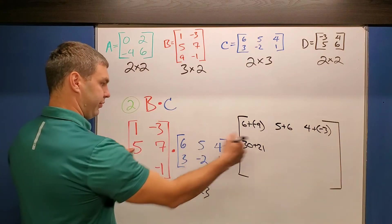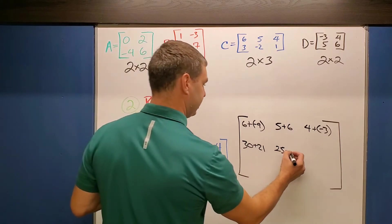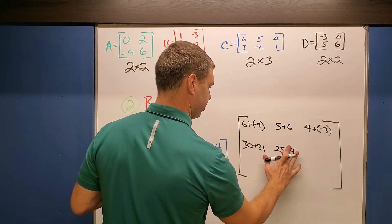5 times 5 for the second one here is 25, 7 times -2 is -14.